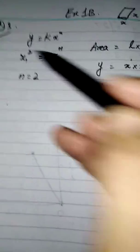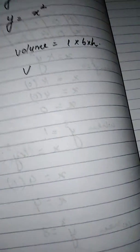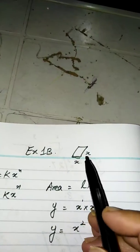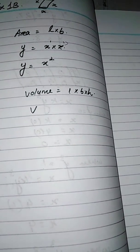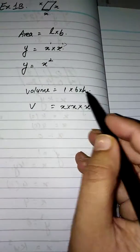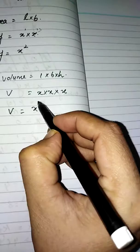In part 2, they give the volume of a cube where the length is x centimeters. The formula for volume is length multiplied by breadth multiplied by height. Since it is a cube, all sides are equal — length, breadth, and height are all x. So volume equals x times x times x, giving x³.